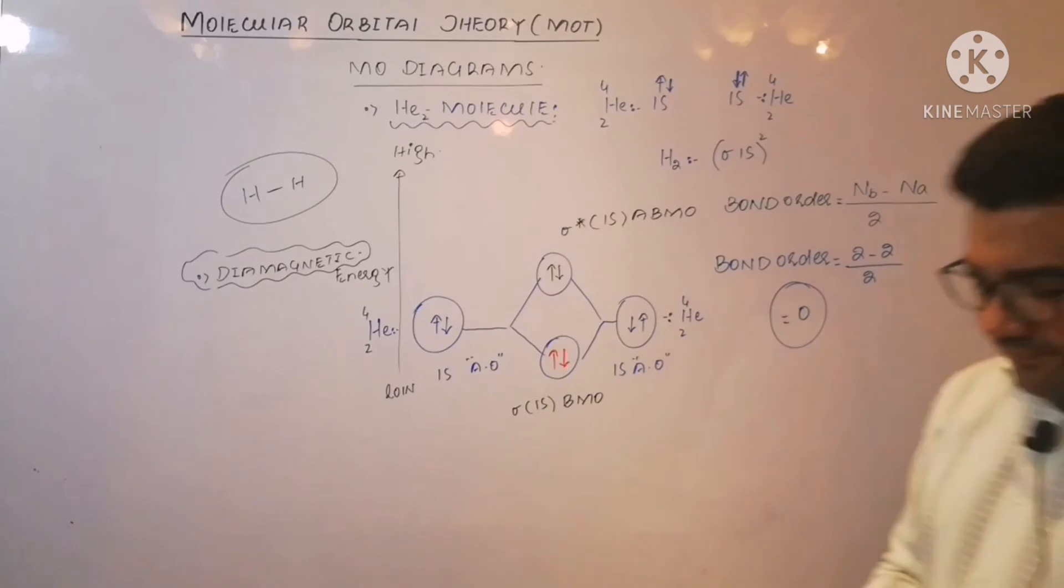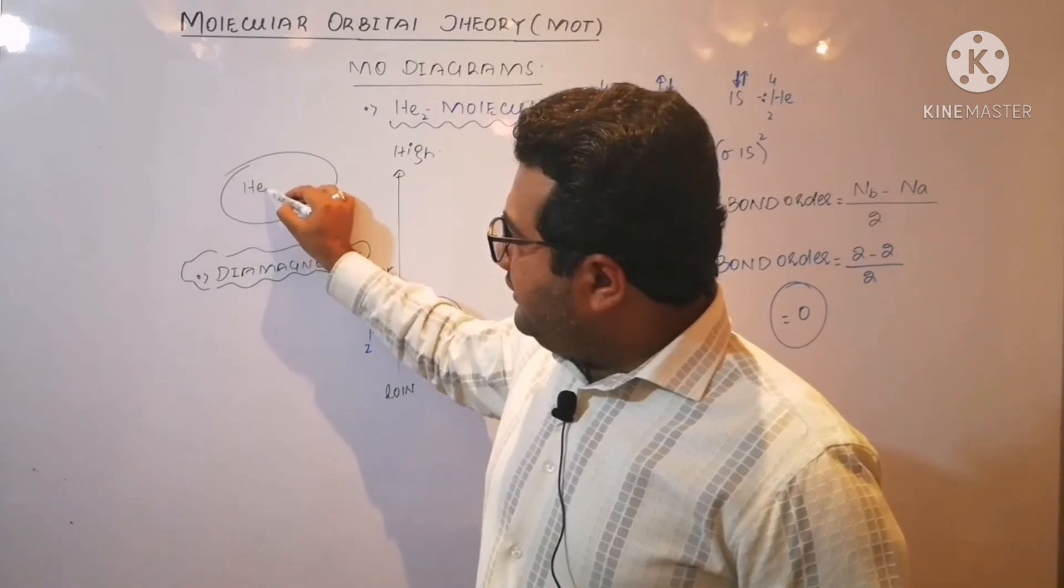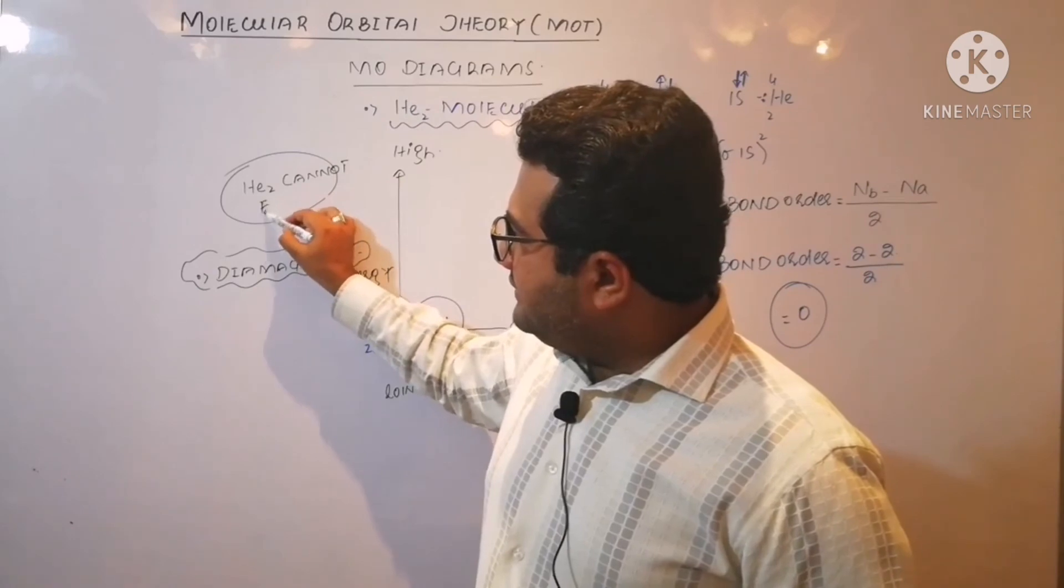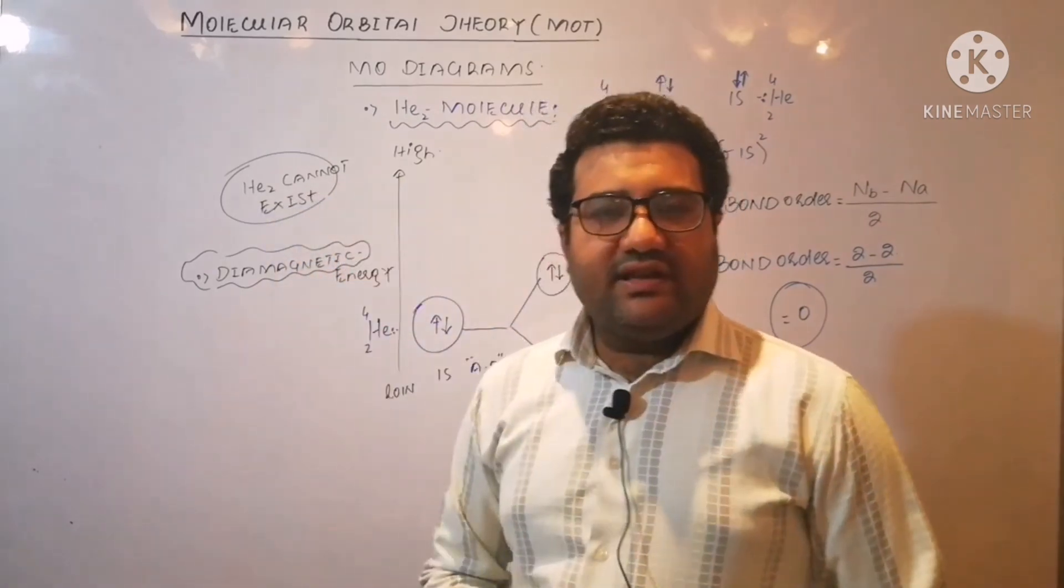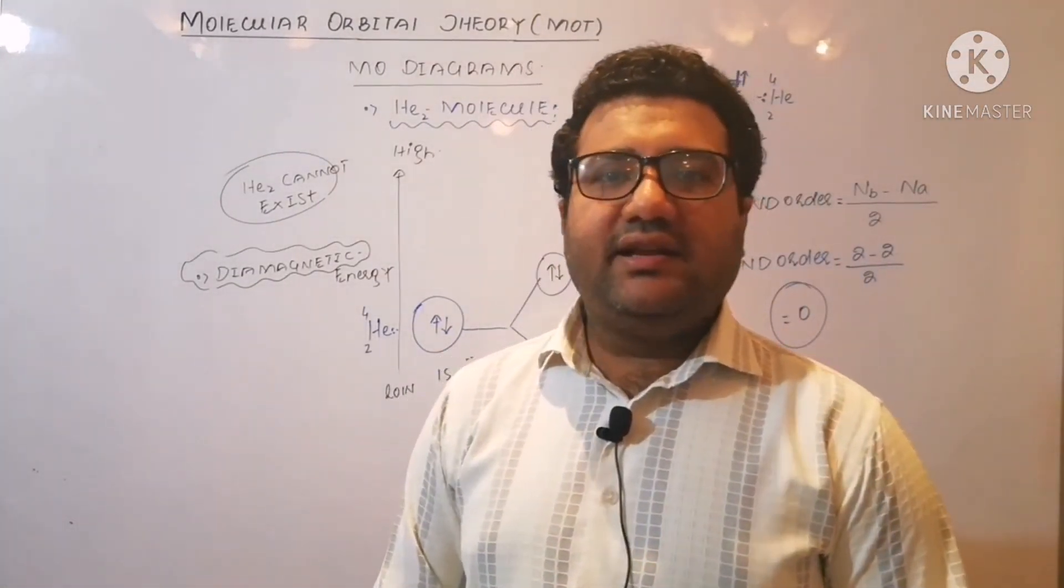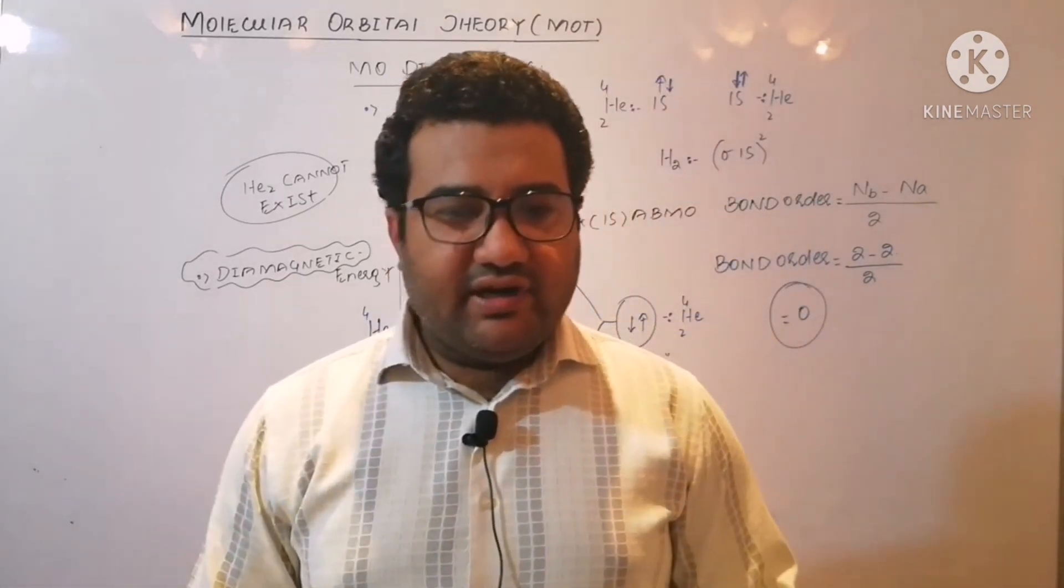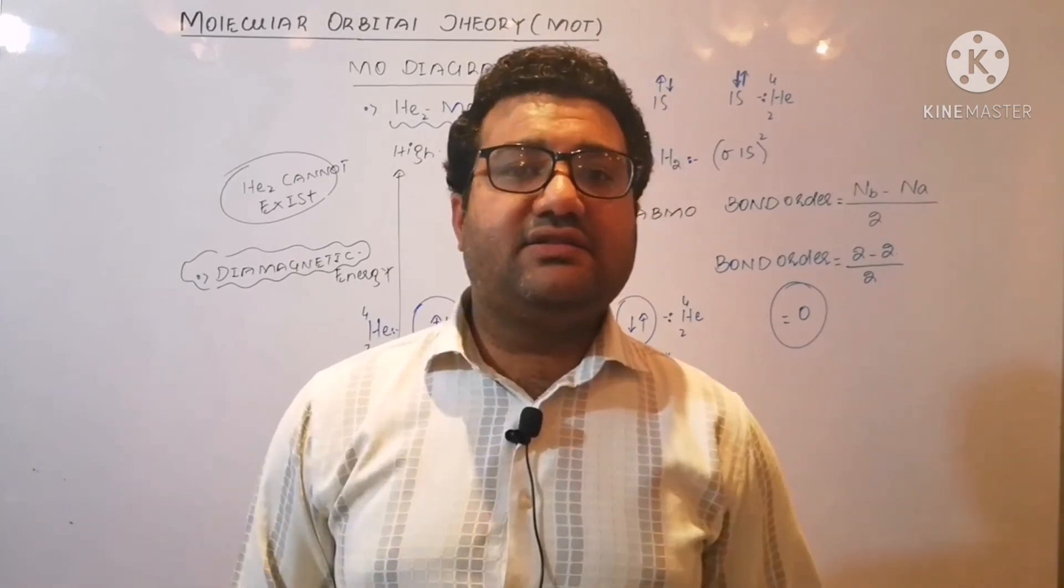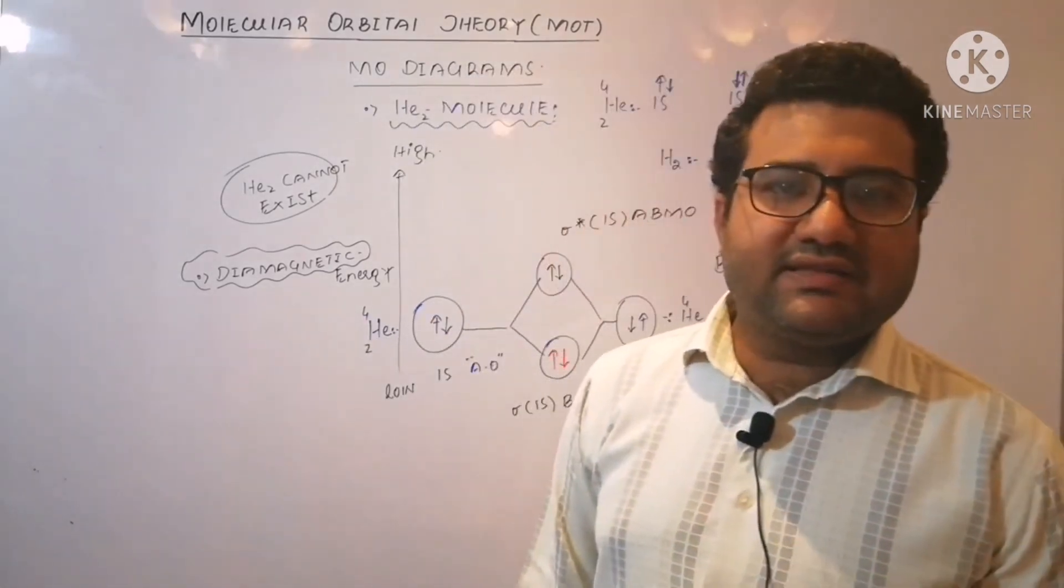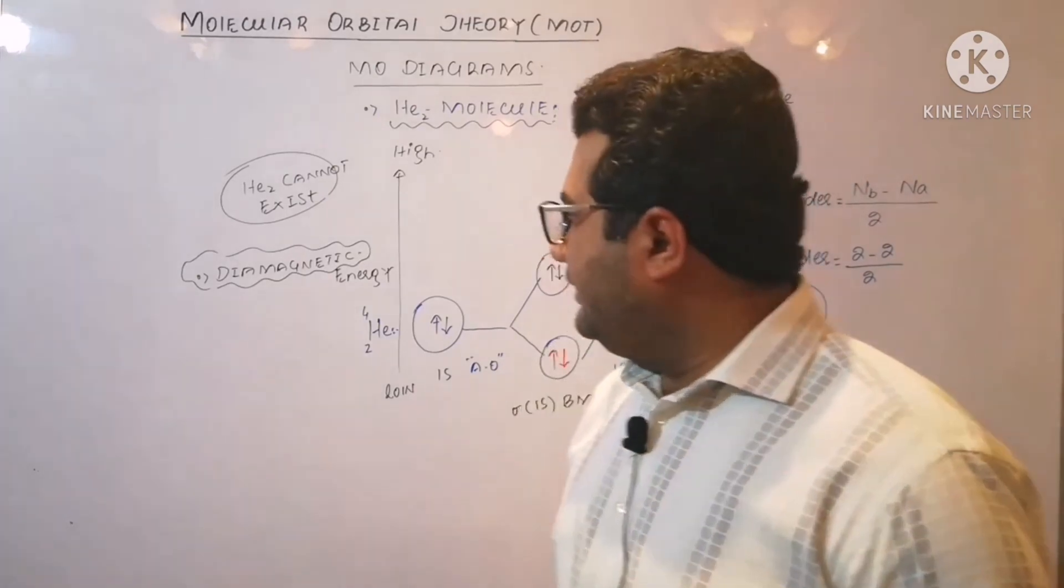What does it mean? It simply means that He2 cannot exist, because in between two helium atoms there will be no bond. So He2, in the diatomic form, helium cannot exist. This theory has this advantage that it explains the non-existence of the noble gases in the diatomic form. It proves that the noble gases must be present in their atomic form. They cannot exist in the diatomic molecular form.